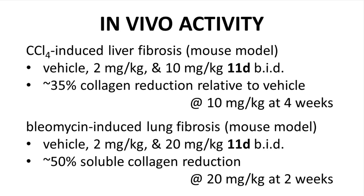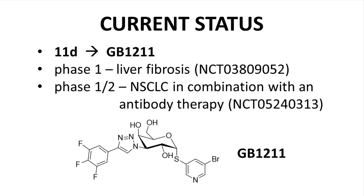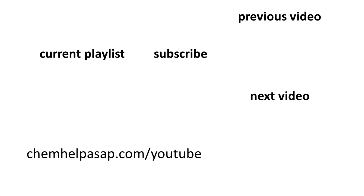Based on the promising efficacy, safety, and PK properties of 11D, the compound has been advanced into the clinic. Compound 11D, with the drug candidate number GB1211, is listed in the paper as being active in two clinical trials: a phase 1 trial for liver fibrosis, and a phase 1-2 trial for non-small cell lung cancer in combination with an antibody therapy. Checking clinicaltrials.gov, the liver fibrosis trial has not been updated for over a year and a half, and the cancer trial has not been updated since early 2022 but may still be recruiting. Thank you for watching this drug discovery story on GB1211, an inhibitor of galactin-3.